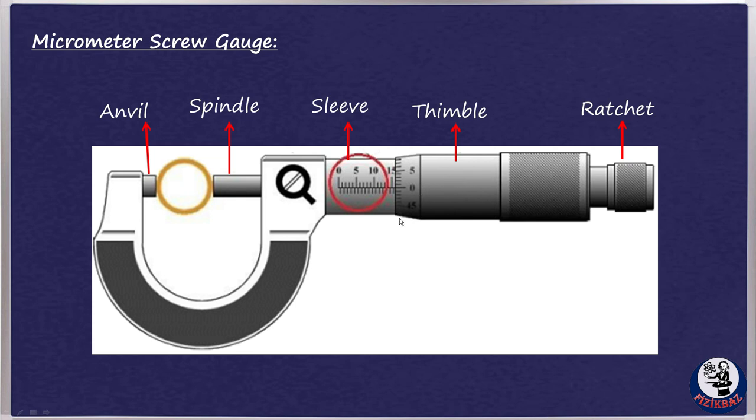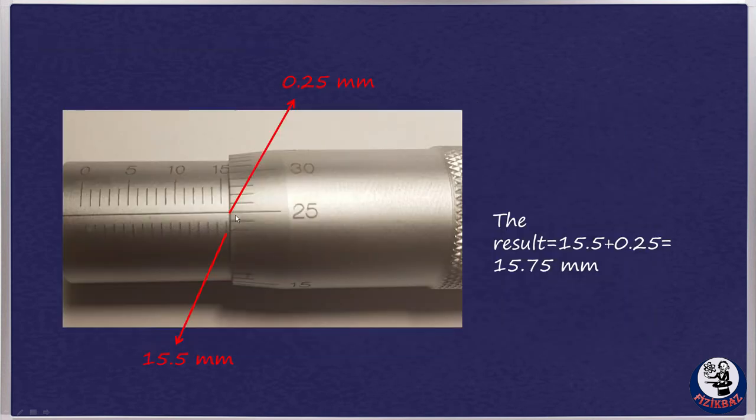Now the thing is, what do we do after this? It's simple. What is the maximum reading visible on sleeve? It's 15.5 millimeters. And on the thimble scale, we determine this by looking at the mark which coincides with the line on sleeve, called datum line. It is 0.25 millimeters. Finally, we'll add up the two readings and the answer is 15.75 millimeters.